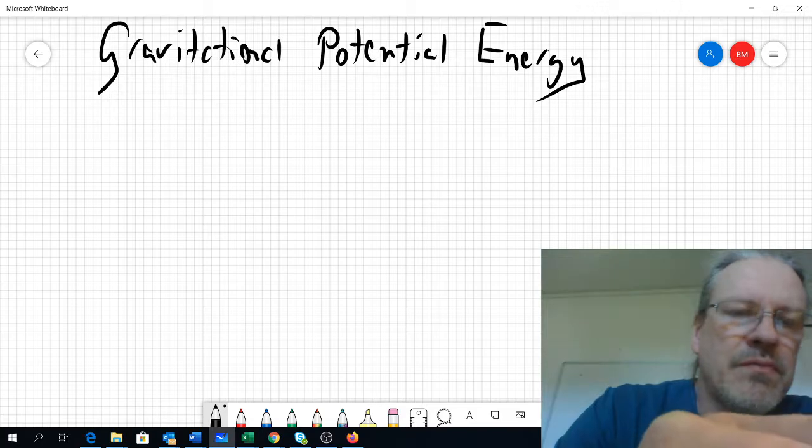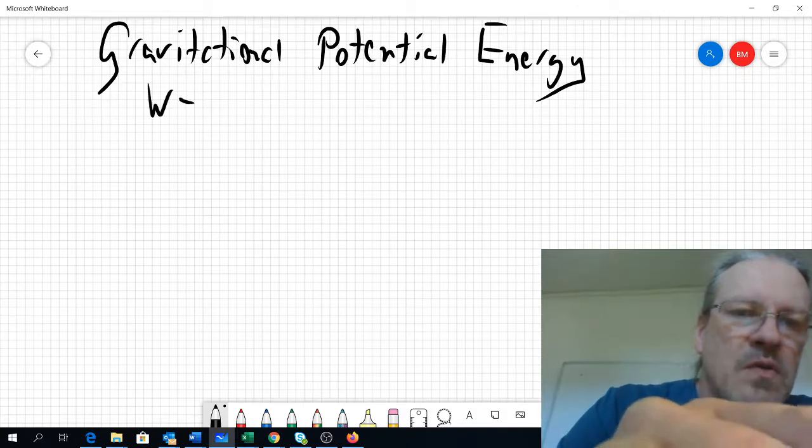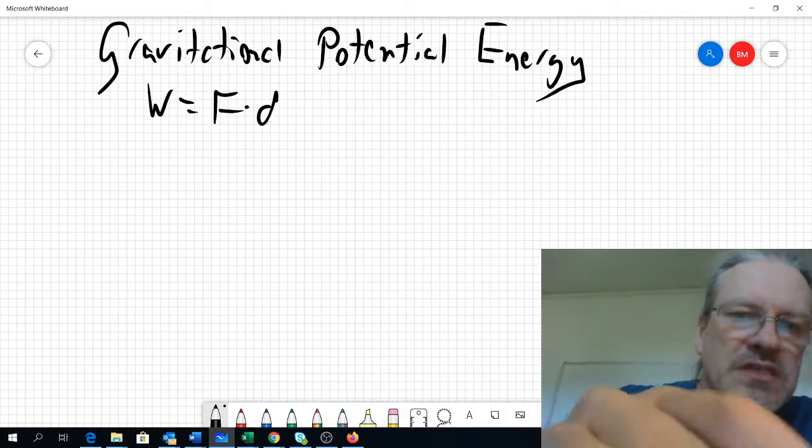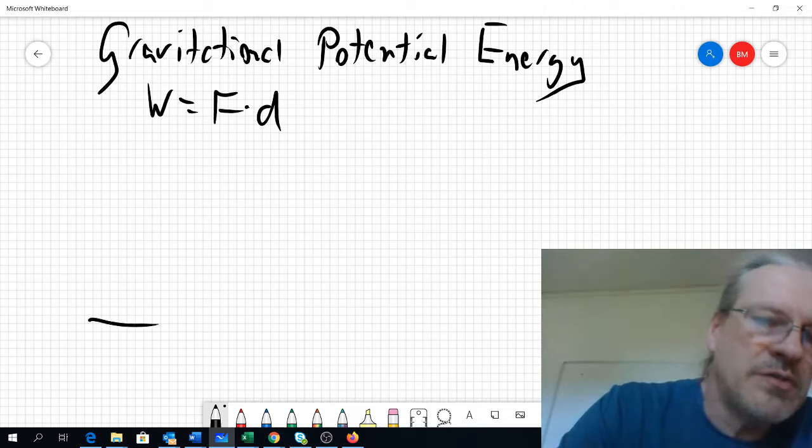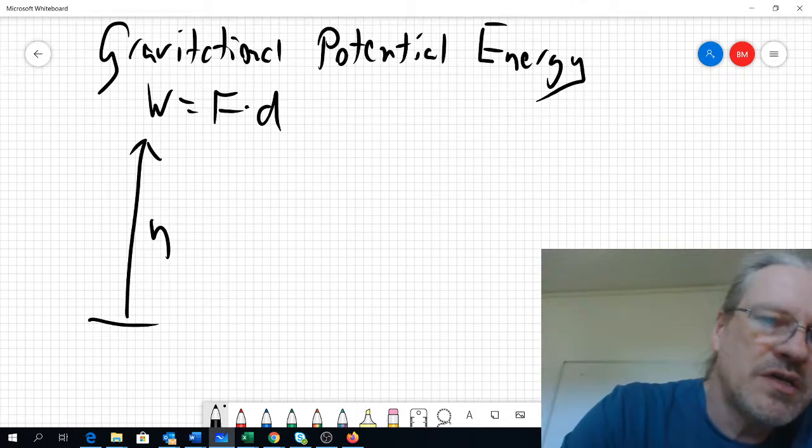We have by definition that work equals force times distance. Now imagine you would lift an object some height h. The object has some mass m.